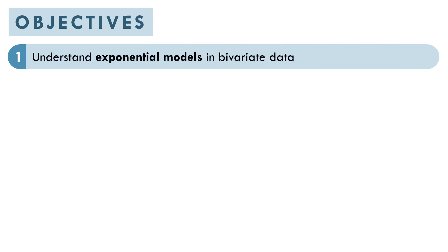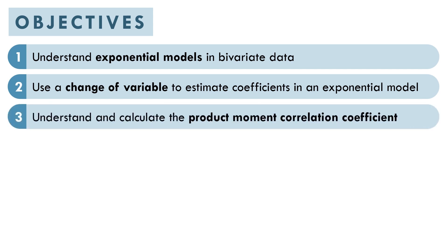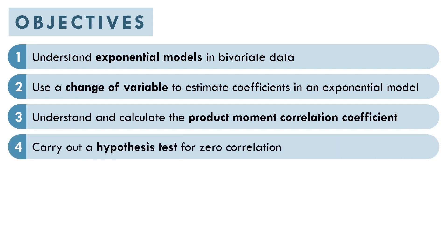So first of all, let's look at our objectives for this chapter. Our first objective is to understand exponential models in bivariate data — that just means data of two variables. Our second objective is to use a change of variable to estimate coefficients in an exponential model. Our third is to understand and calculate the PMCC.